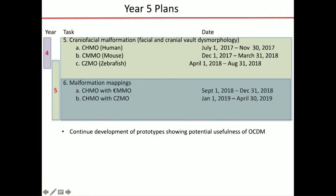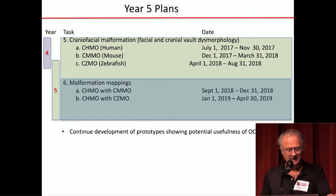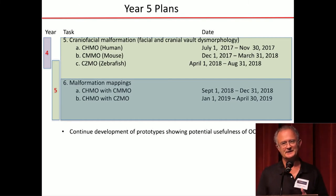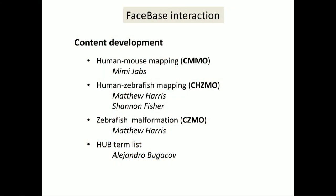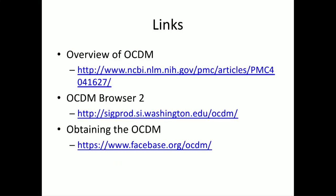In year five our plans are basically to develop mappings between these malformations, add to the richness of these relations, and as time permits, Todd will continue developing these prototypes showing the potential usefulness of the OCDM. This could be an example of reuse of FaceSpace data — not only biological researchers using the data for their own research, but using the hub's application programming interfaces to create new applications that can use that data in other ways. Here are some links: an overview of the OCDM, the browser you can try out at the middle link, and how to get the OCDM files. Thank you.